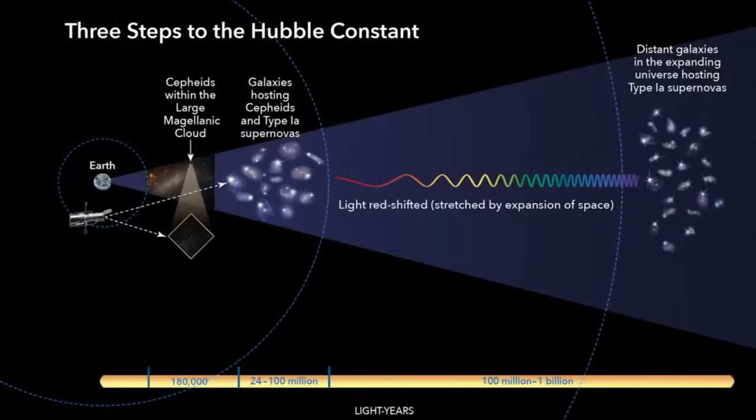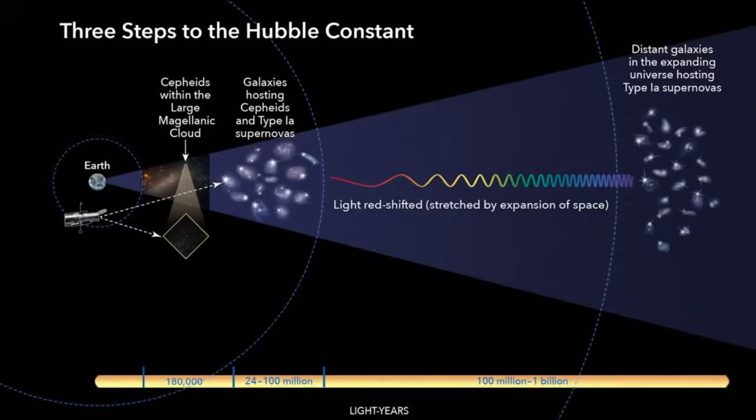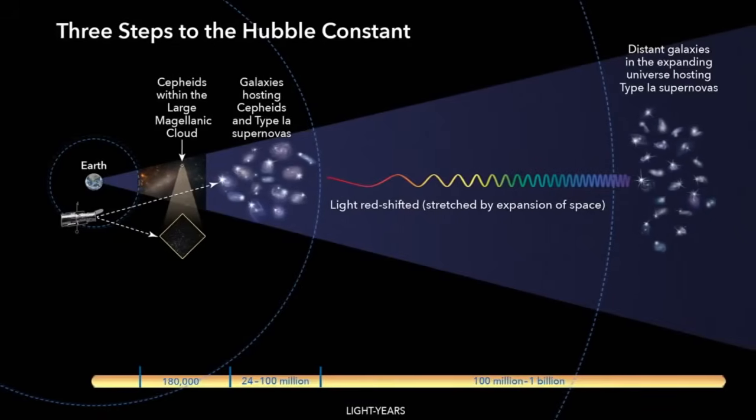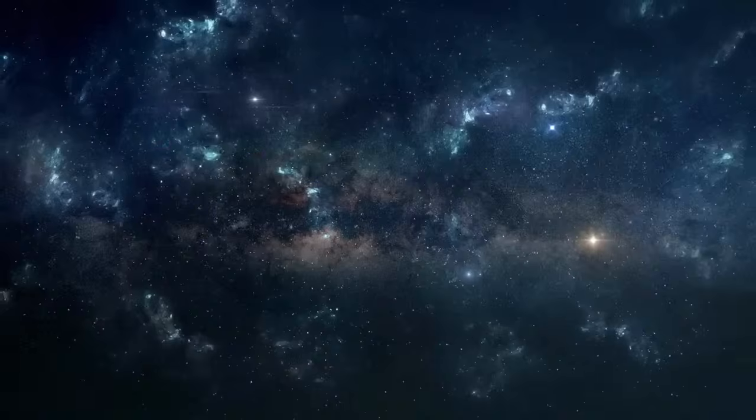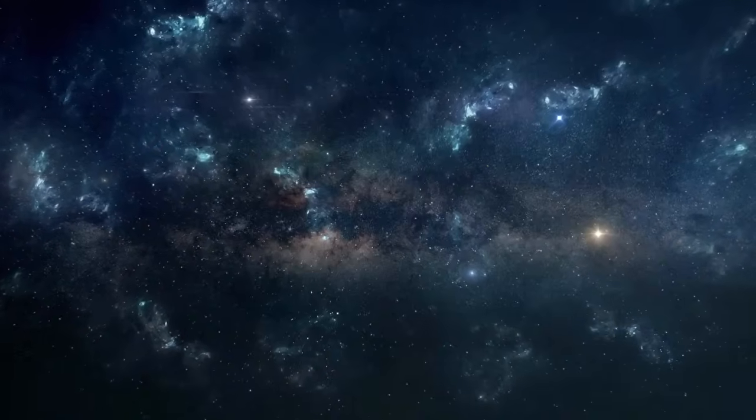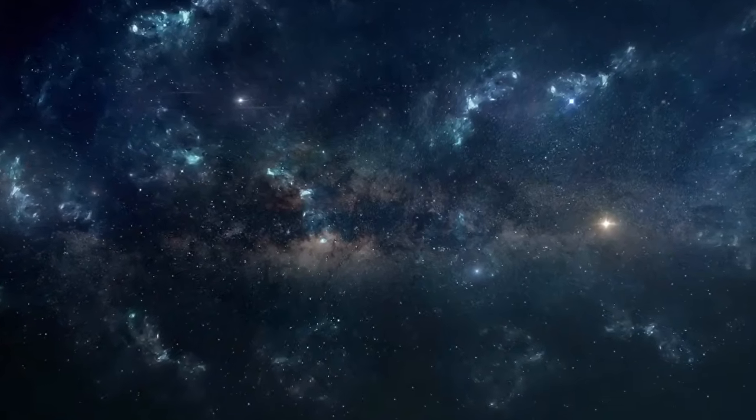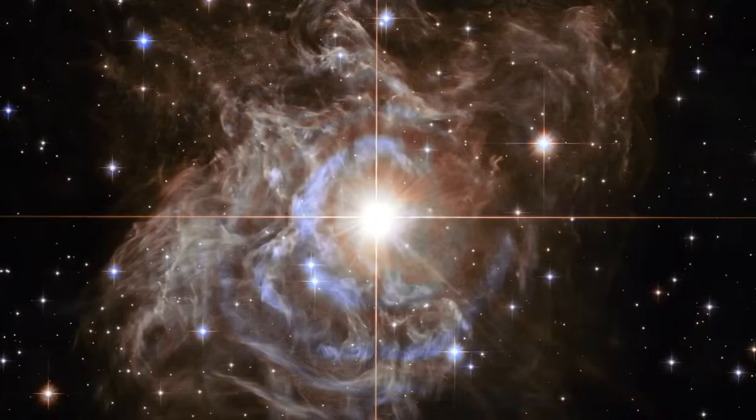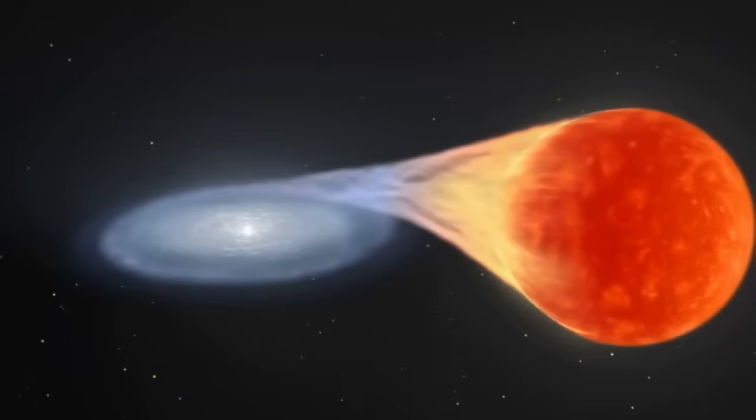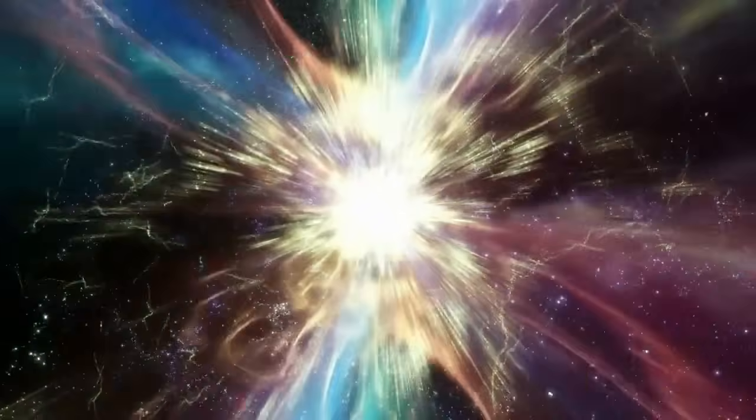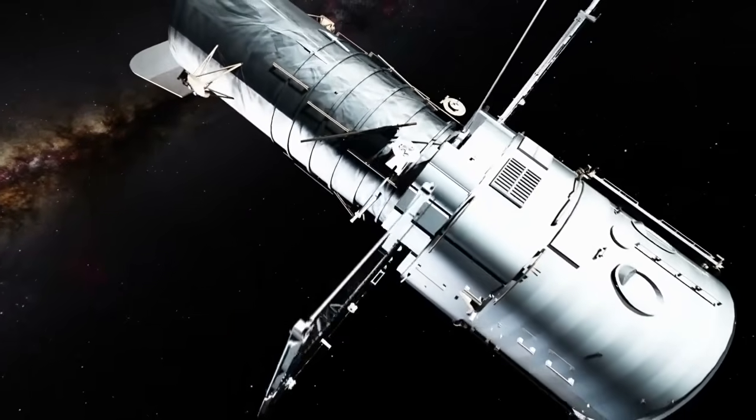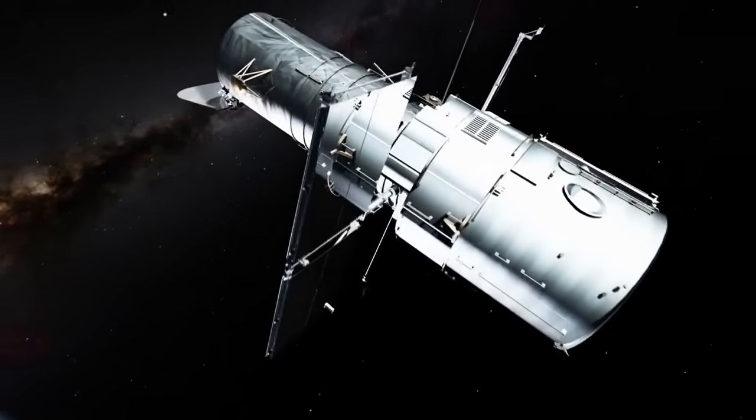There are several ways to measure the Hubble constant, broadly falling into two categories: local measurements and early universe measurements. Local measurements involve looking at astronomical objects within the universe. By measuring the speed at which these objects are moving away from us, scientists can estimate the Hubble constant.